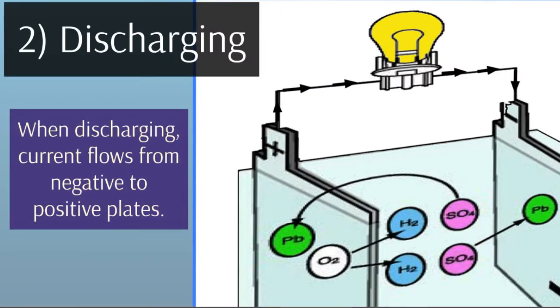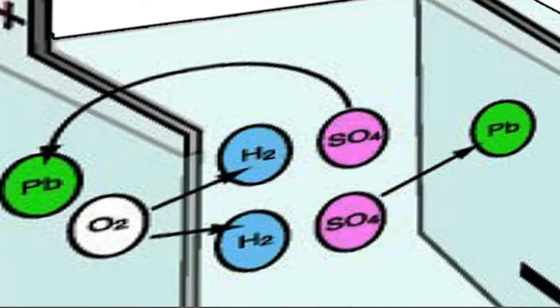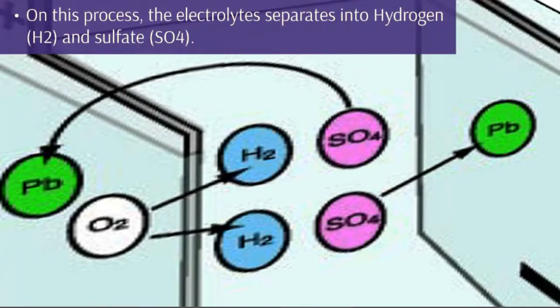When discharging, current flows from negative to positive plates. During this process, the electrolyte separates into hydrogen and sulfate.